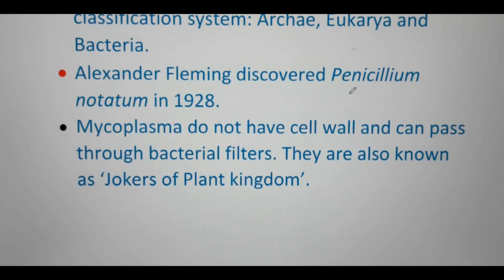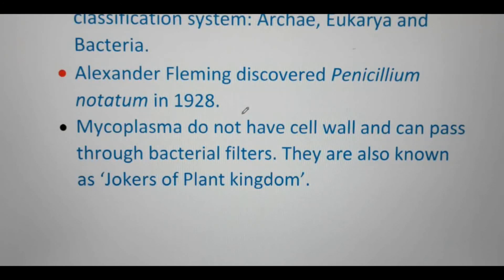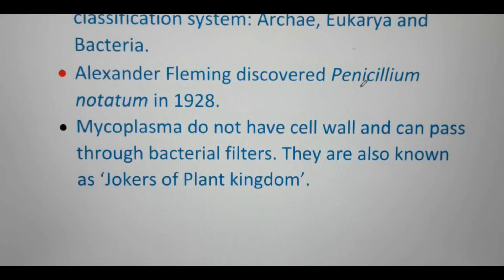Alexander Fleming discovered Penicillium notatum in 1928. From Penicillium notatum, penicillin — the antibiotic — was discovered in 1928. Commercially, penicillin is now extracted from the genus Penicillium chrysogenum.